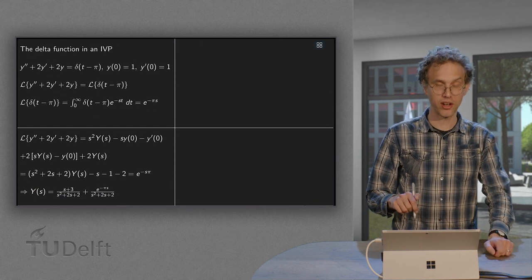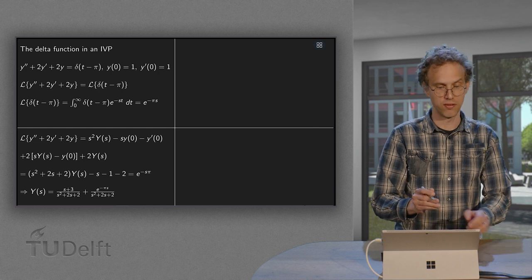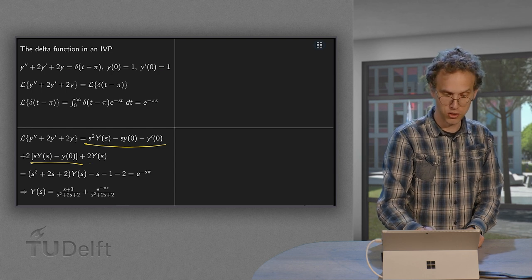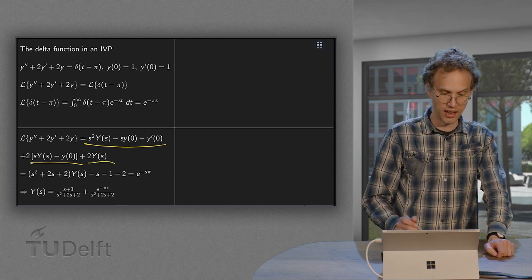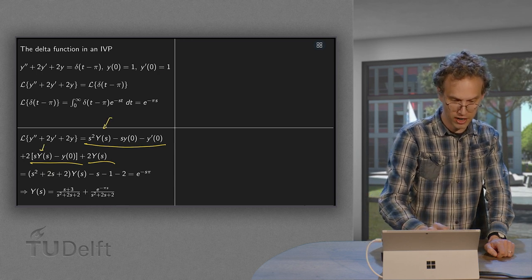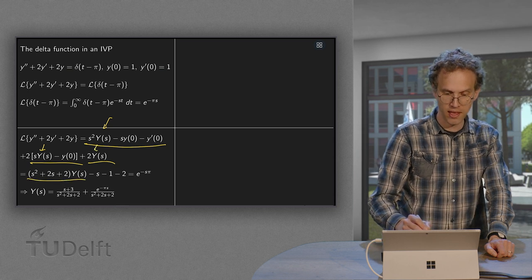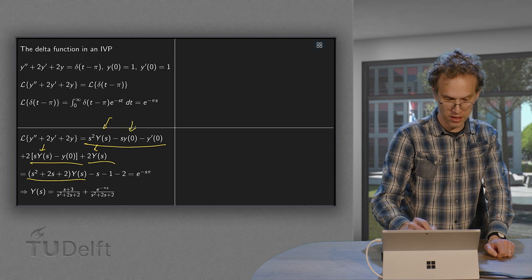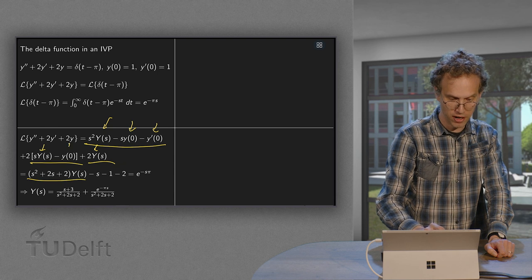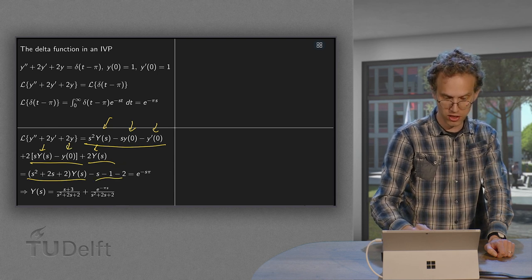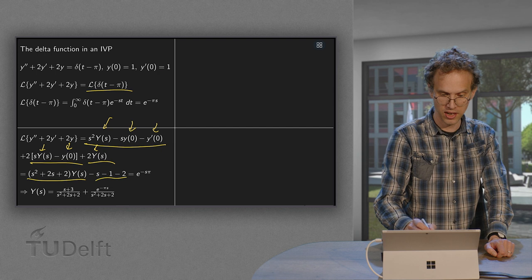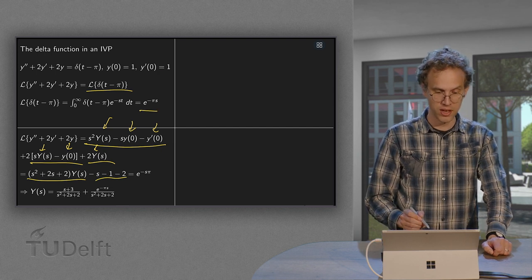What about the Laplace transform of the other side? Well, that is standard. You have the Laplace transform of y double prime plus 2 times the Laplace transform of y prime plus 2 times the Laplace transform of y. Then, collecting a few terms, we have s squared plus 2s plus 2 times capital Y. From here, we get y(0) equals 1, so we get a minus s. Y prime of 0 equals 1, so we get a minus 1. And here we have y of 0 is still 1, so we get a minus 2. And it is equal to the Laplace transform of the right-hand side equals e to the power minus pi s.